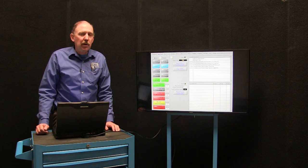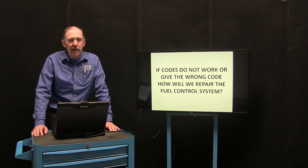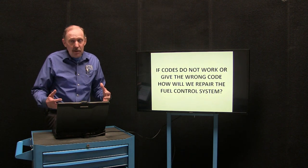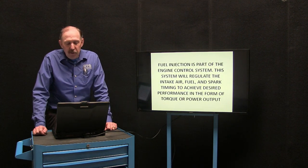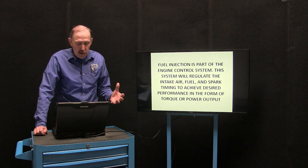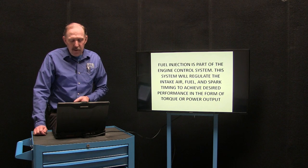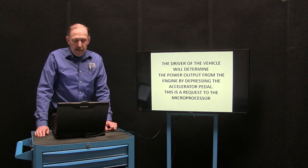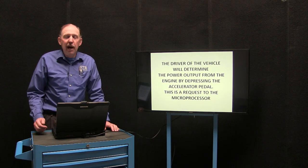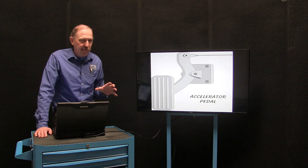This has to do with some of the program structures within these systems. So if codes don't work or give me the wrong information, how are we going to fix these fuel control problems when they're on a real running engine? Well, the fuel injection is part of the engine control system. This system will regulate the air intake on a drive-by-wire car, fuel and spark timing to achieve the desired performance in the form of torque or power output. The driver of the vehicle will determine the power they want — driver intent — by pushing on the accelerator pedal.